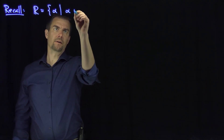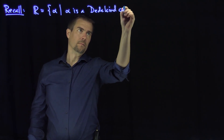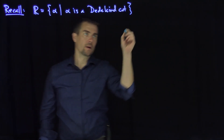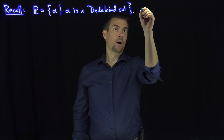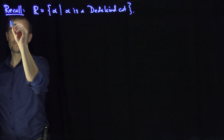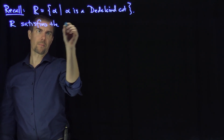Hello, students. In this video, we'll show the set of real numbers satisfies the least upper bound principle. We recall that the real numbers are the set of all alpha such that alpha is a Dedekind cut. And we claim that R satisfies the least upper bound property.